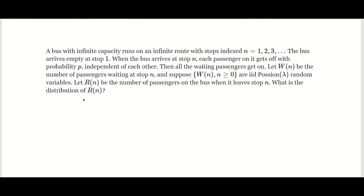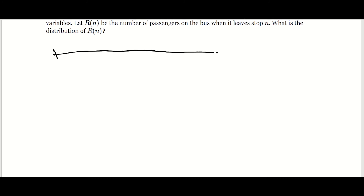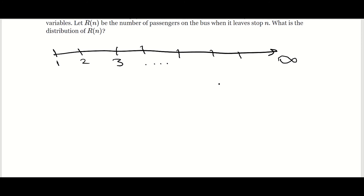Let me figure out how to scroll. Basically, we have a timeline, and it's a timeline of bus stops. So we have a bus that's going around doing all these stops — starts at stop 1, goes on to stop 2, 3, and goes on infinitely. What we're trying to find out is some stop n in the middle, and how many people are going to be on the bus when the bus leaves that stop n.